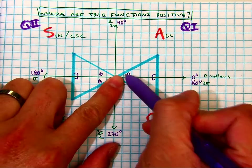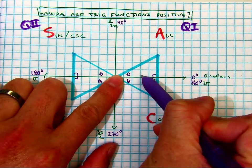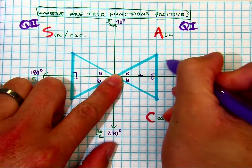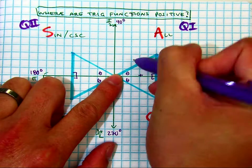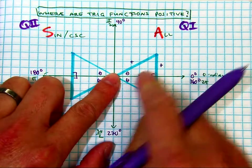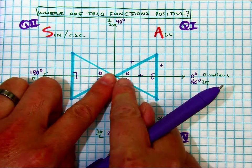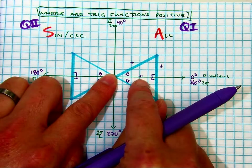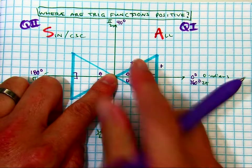This makes sense because your x value here is positive, and your y value is positive, and radius will always be positive. So if you did something like cosine of theta, that would be the x divided by the r. Positive number divided by a positive number gives you a positive.